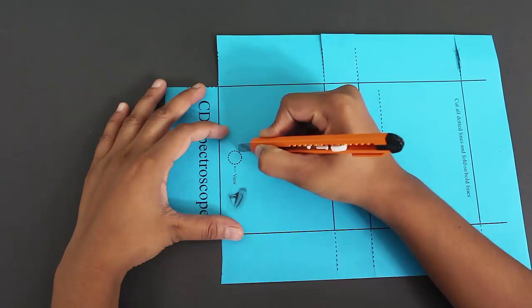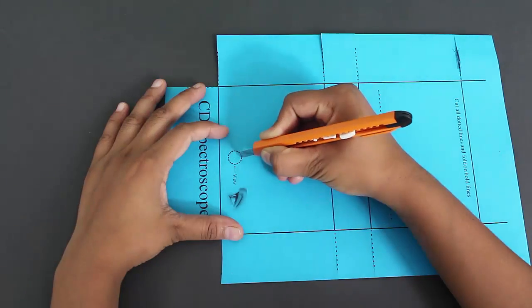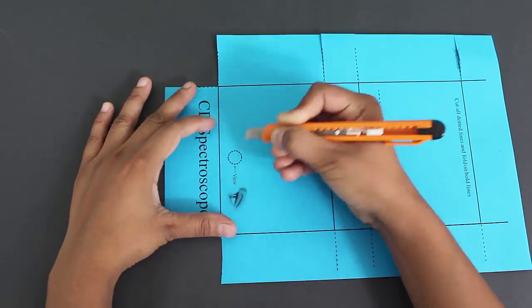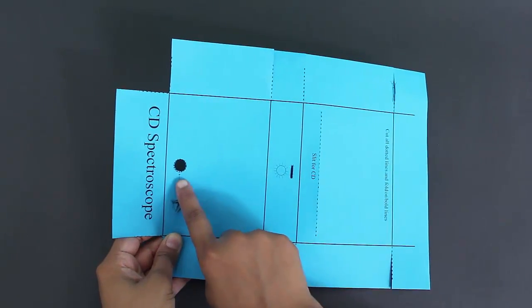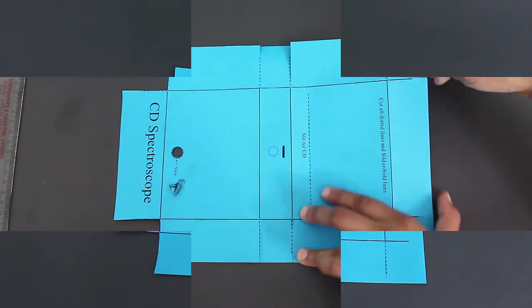Make another small rectangular slit for the light to come in and a circular window for viewing. You can see all these three cuts, two slits and a circular window.